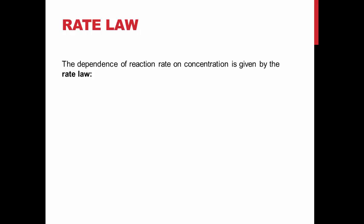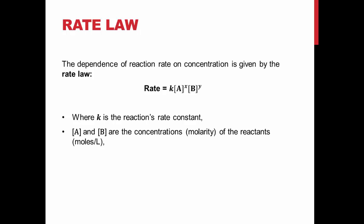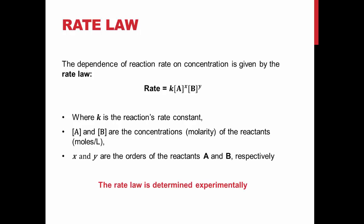Because each reactant can affect the reaction rate differently, we sum it up in what's called a rate law. The rate law tells us the dependence of reaction rate on concentration, and it is given by the expression: rate equals k times concentration of A to the power of x, times concentration of B to the power of y. In this expression, k is the reaction's rate constant, A and B are the concentrations of the reactants in moles per liter, and x and y are the orders of reactants A and B respectively. We will determine all of these variables experimentally.